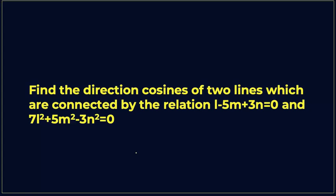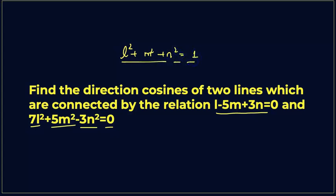In this question we have to find the direction cosines of two lines which are connected by the relations: l minus 5m plus 3n equals 0, and 7l squared plus 5m squared minus 3n squared equals 0. There is one more condition given as l squared plus m squared plus n squared equals 1. We will use all these conditions in order to solve this question.